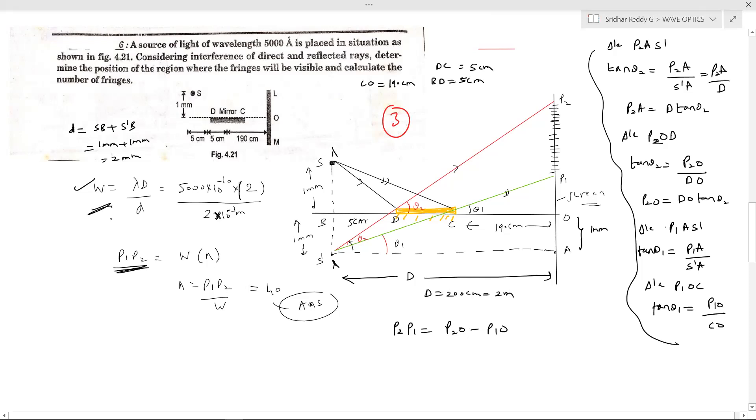So P1 P2 by fringe width is what we calculated. I'll get the number of fringes. This will be our answer. You have to work out the mathematics part here. Now let's look at that. These are some types.